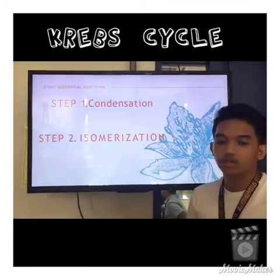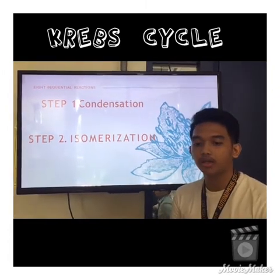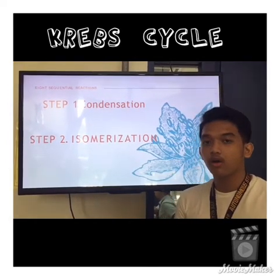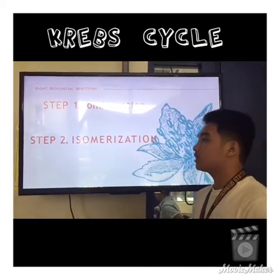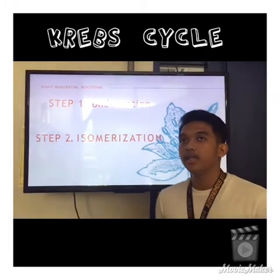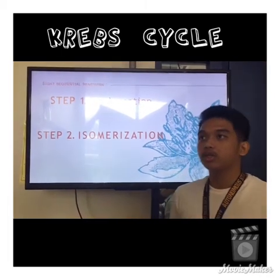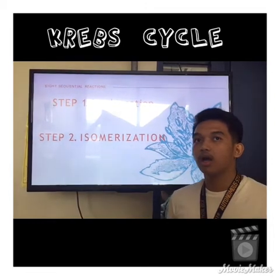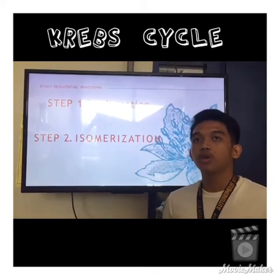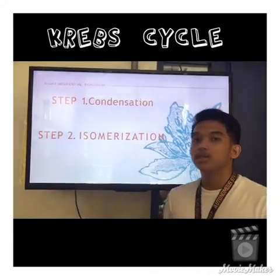In step one, condensation: the condensation reaction is when smaller molecules join to form a larger one by removing functional groups, often water. In condensation, the acetyl group and coenzyme A are separated, then the acetyl group is combined with oxaloacetate. The acetyl group has two carbons and oxaloacetate has four carbons, so when combined it becomes citrate, a six-carbon compound.